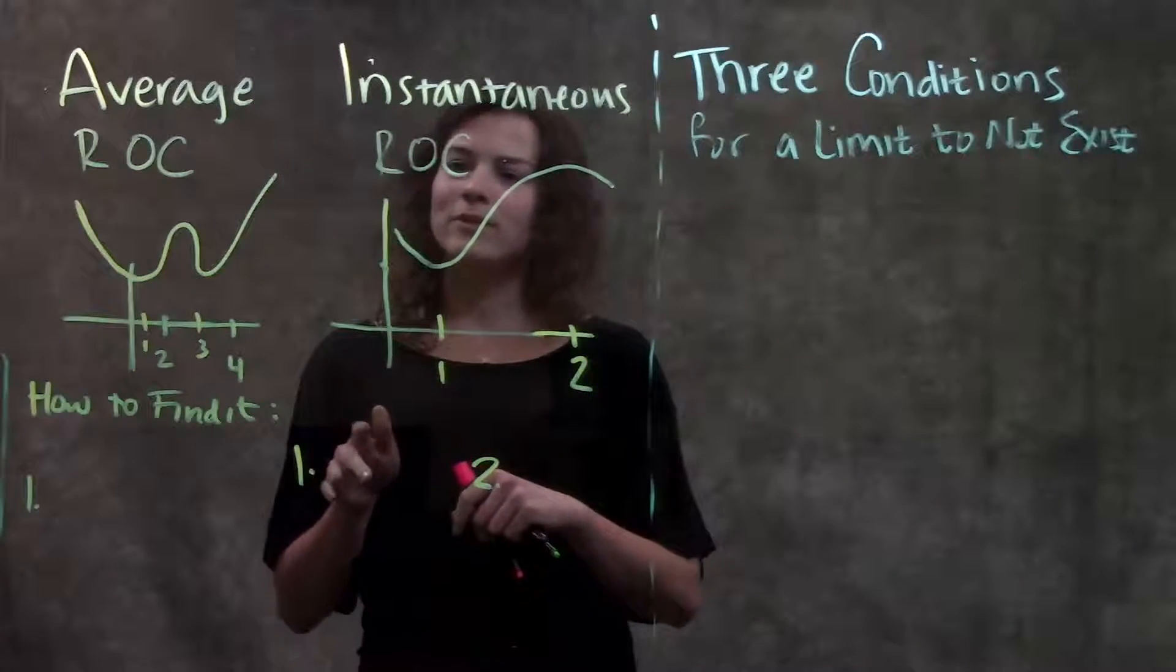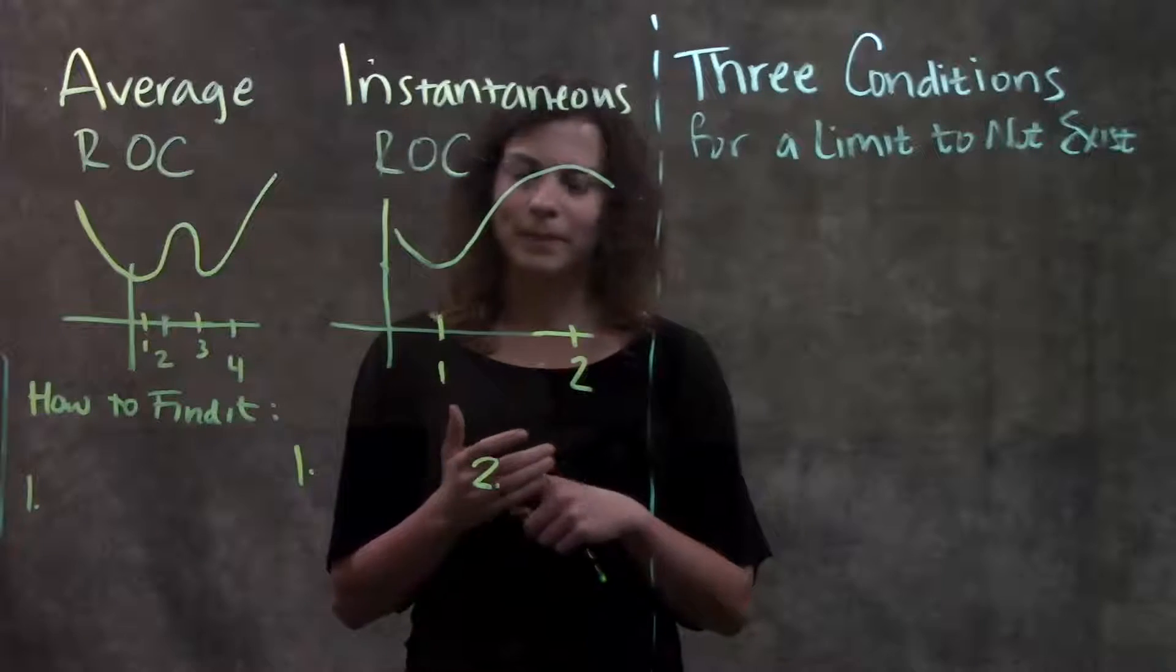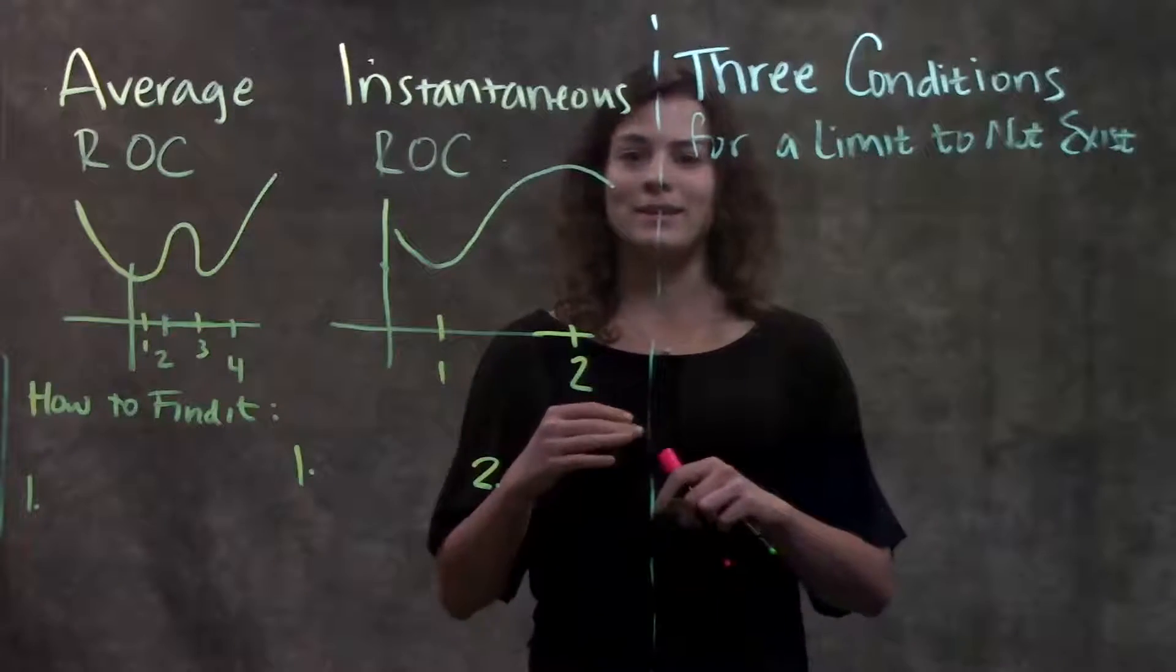Looking at this first part, we have average rate of change versus instantaneous rate of change. Whenever you see the words rate of change, you want to think slope.